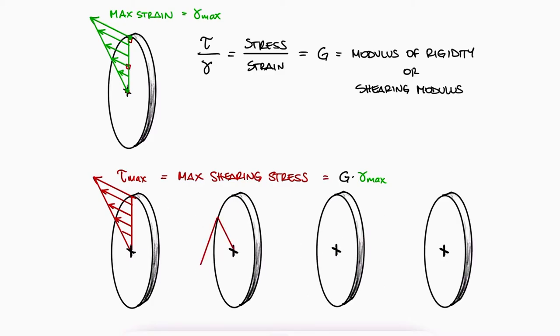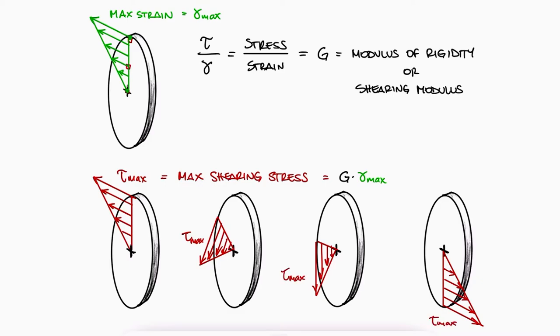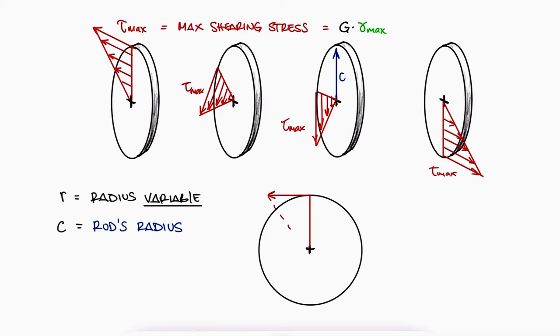It's also true in any radial direction from the center of the disk. We will keep the r variable for any radius value between zero and the radius of the rod, and we'll call c the radius of the rod. Since the relationship is linear between zero and tau max, the value for tau for any radius r would be equal to r over c times tau max.